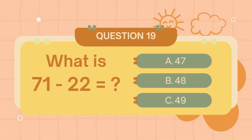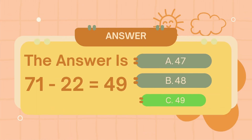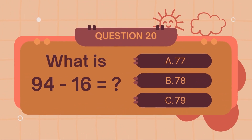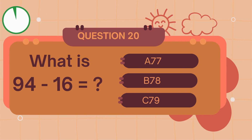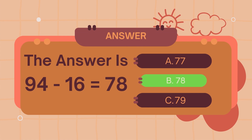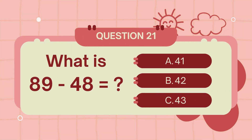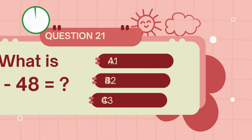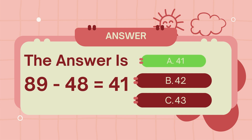What is 79 minus 24? The answer is forty-one.